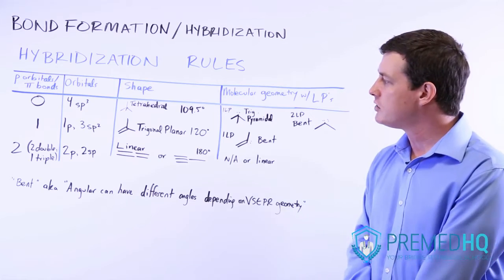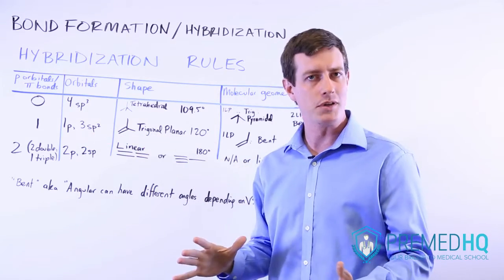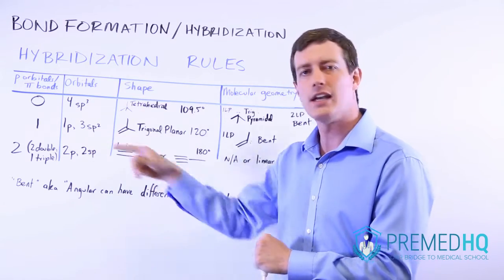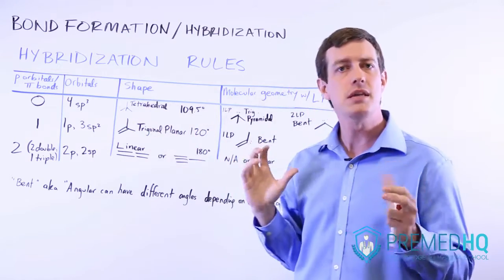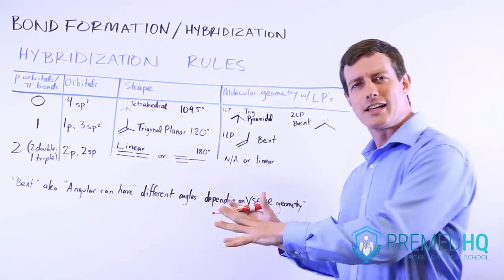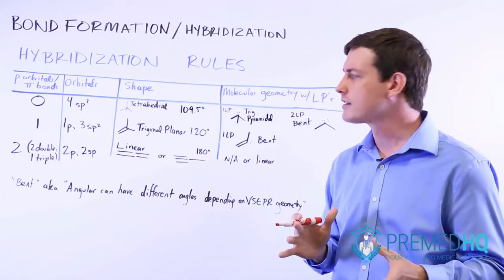They're called sp2 because they're one part s orbital and two parts p orbital. Or you might hear it described as them having 33 percent s character and 66 percent p character, because the shape of the orbital cloud will often look like it's two-thirds of a p cloud and one-third of an s cloud.